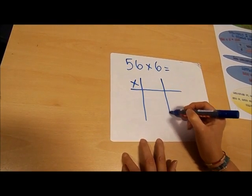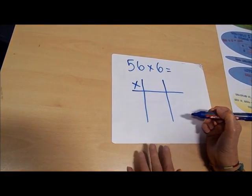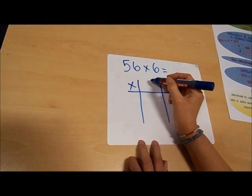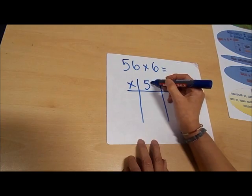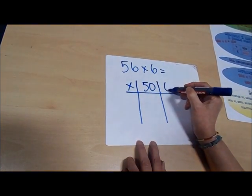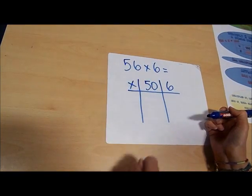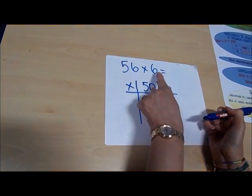Now at the top here I'm going to partition this number into its tens and units. So we have five tens or 50 and six units. Five tens, six units makes 56, and I'm going to put this number down here.